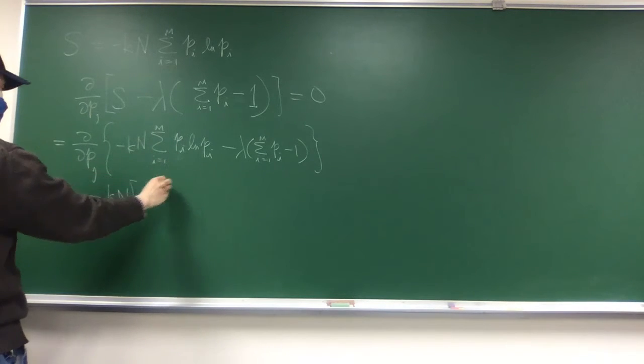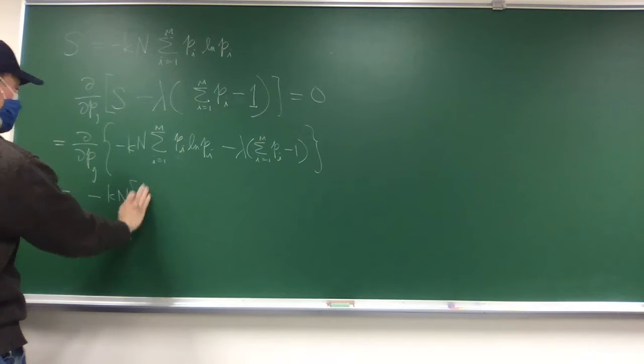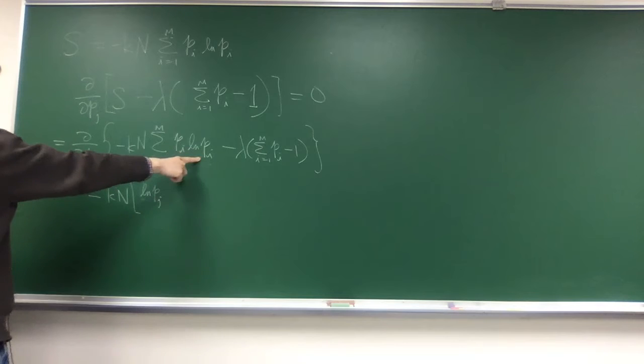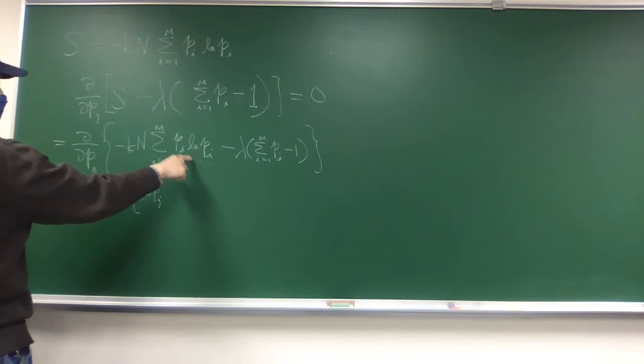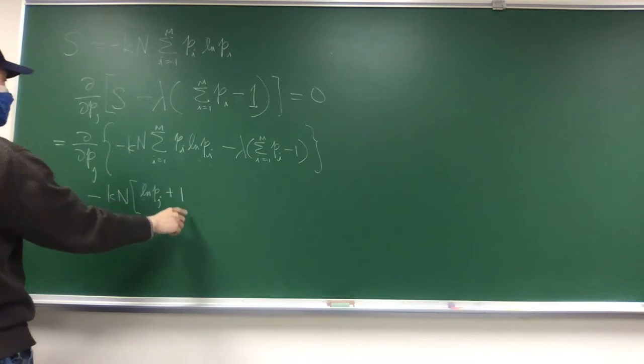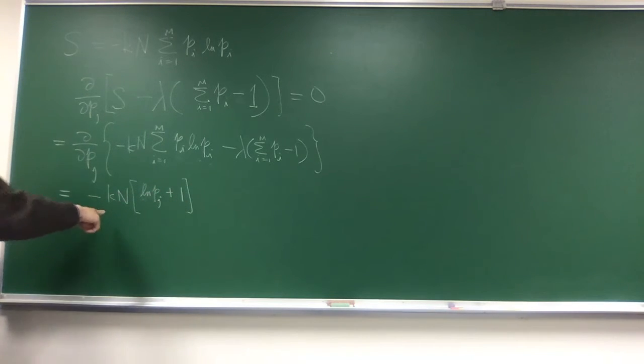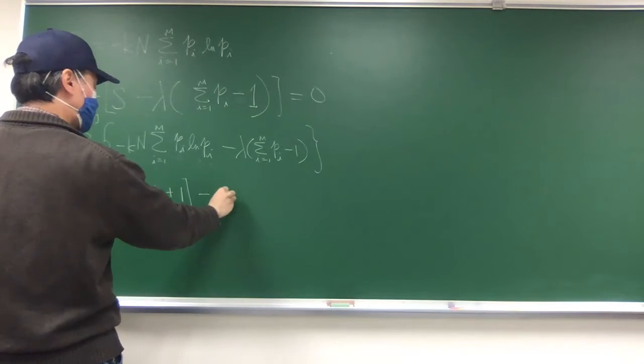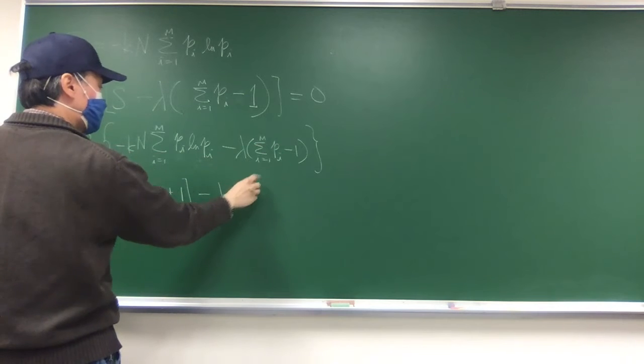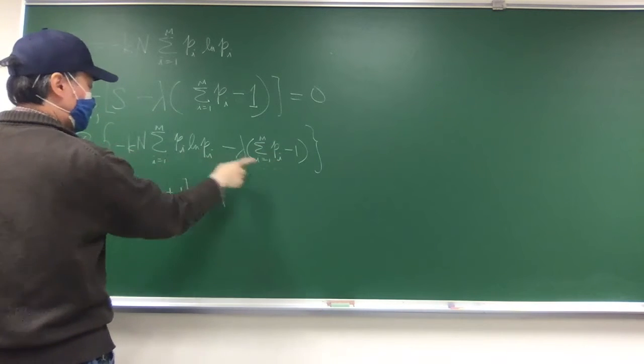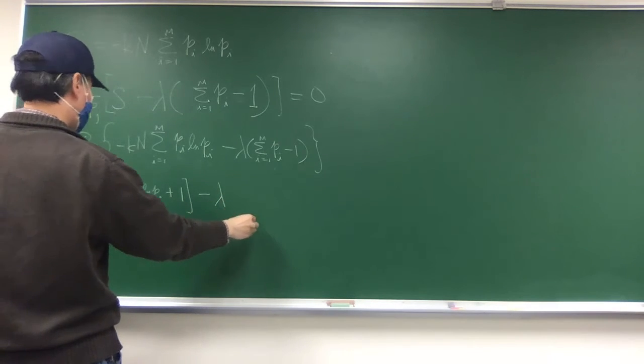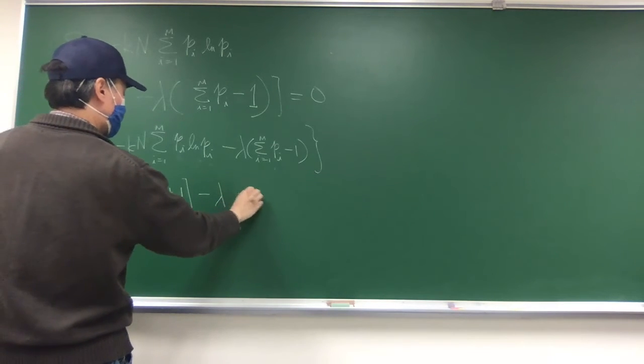And so what you get is the first term you have minus kn. And then do a derivative of this one with respect to p sub j, so only i equals j will survive. And do the derivative, so therefore you have two terms. One is log p j, and then the other one is one over p, cancel the numerator so it's plus one. And then minus lambda. The derivative when p i equals p j gives you one, so that equals to zero.